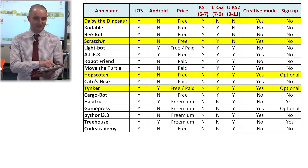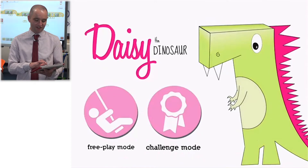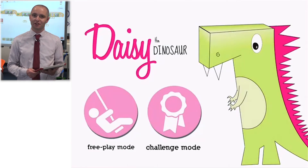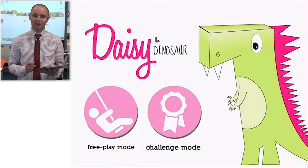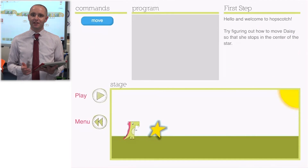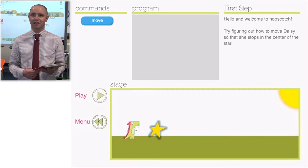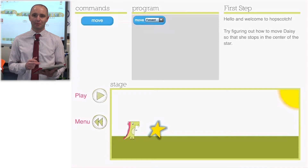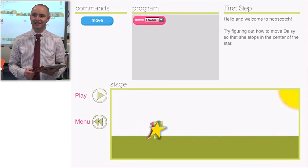So, to the iPad. First we're going to look at Daisy the Dinosaur, which is suitable for pupils when they first enter primary school at age 5. From the title screen, pupils have the option of either free play mode, where they have access to all the program's commands, or challenge mode, where pupils have to undertake progressively more difficult problems. We'll have a look at challenge mode. Within this first level I have to get Daisy to move to the star by creating an algorithm — a set of instructions to achieve a specific goal. Just like most visual programming languages, I have to drag the move command block into the area in the middle of the screen. I then tap play and Daisy wiggles to collect the star.